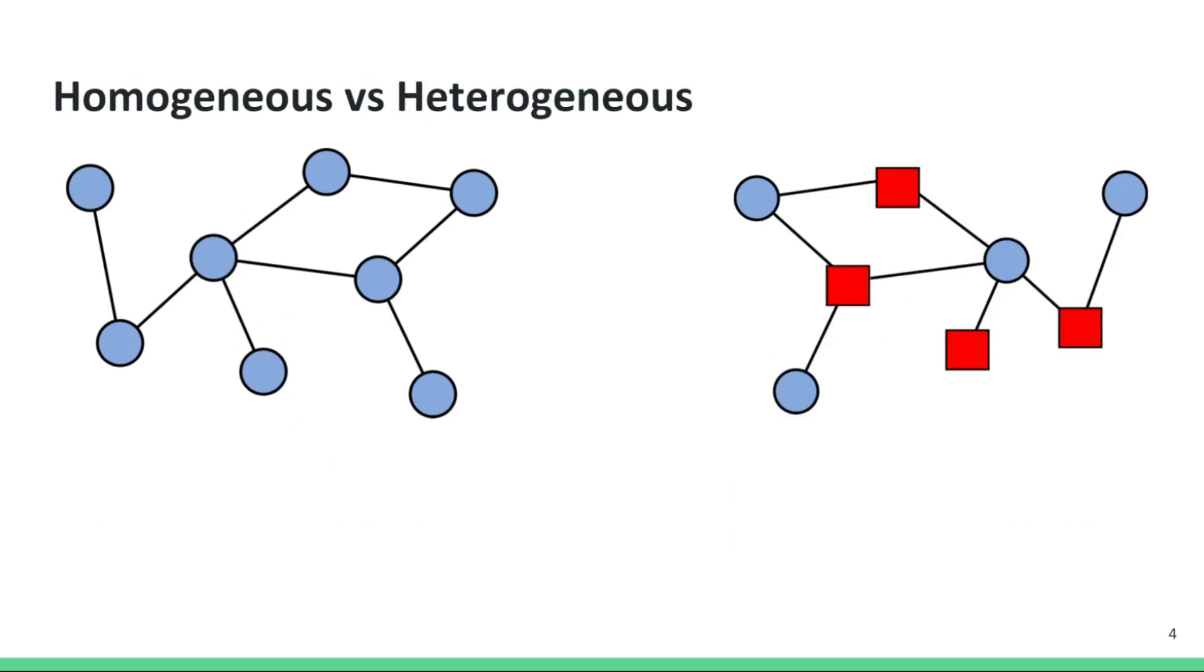A graph may have one or several types of nodes. If all nodes in a graph are of one type, we call them homogeneous graphs. If a graph has several types of nodes, they are known as heterogeneous graphs. For example, knowledge graphs are heterogeneous graphs where nodes may represent several entity types such as person, location, institute, etc.